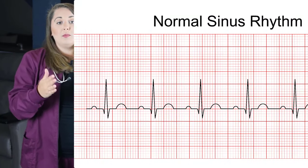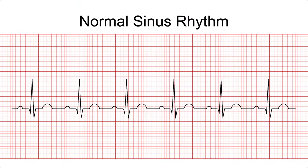Let's jump into the most common sinus rhythms, which include normal sinus rhythm, sinus bradycardia, and sinus tachycardia. Following our six steps, normal sinus rhythm has a rate between 60 and 100 beats per minute — neither too fast nor too slow. It's within that normal vital sign limit range, hence the name normal sinus rhythm.